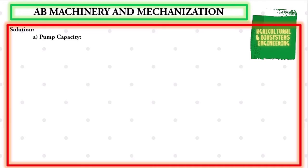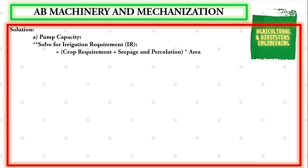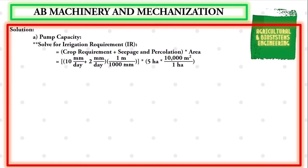The first value we are going to solve is the pump capacity. We begin by solving the irrigation requirement (IR). Using the formula: IR = (crop requirement + seepage and percolation) × area. Substituting: (10 mm/day + 2 mm/day) ÷ 1000 mm/m × 5 hectares × 10,000 m²/hectare. The millimeter and hectare units cancel, giving IR = 0.012 m/day × 50,000 m² = 600 cubic meters per day.